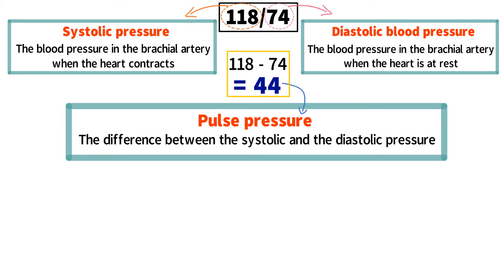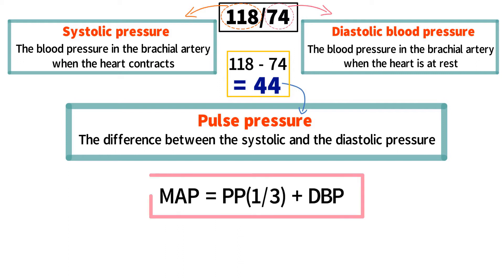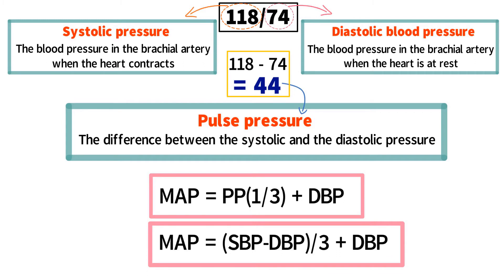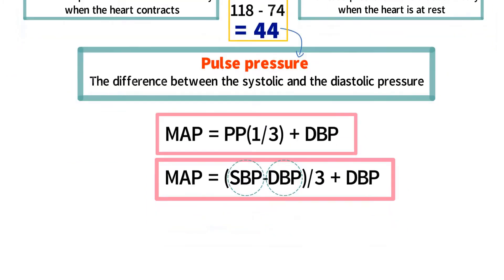The pulse pressure is significant because formulas for calculating mean arterial pressure often include it. A common formula is: mean arterial pressure equals pulse pressure times one-third plus diastolic blood pressure. Another common formula leaves out the term pulse pressure, though the calculation is still present: mean arterial pressure equals systolic blood pressure minus diastolic blood pressure, divided by three, plus diastolic blood pressure. Since diastolic blood pressure is subtracted from systolic pressure, the value for pulse pressure is still present in the equation, even if not referred to by that name.